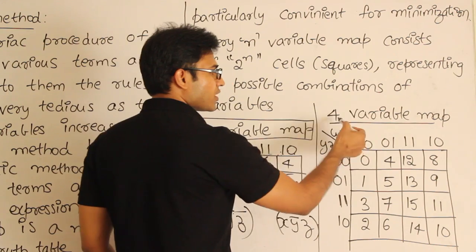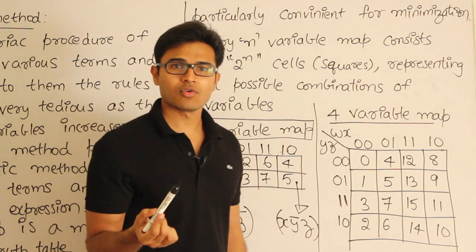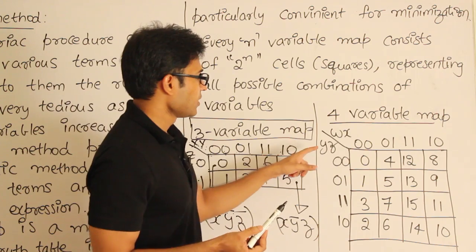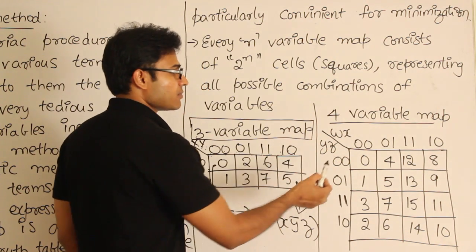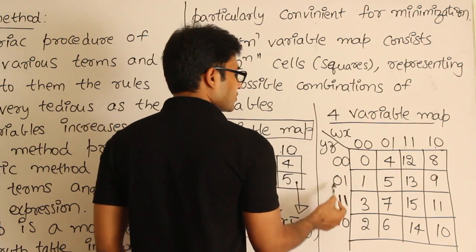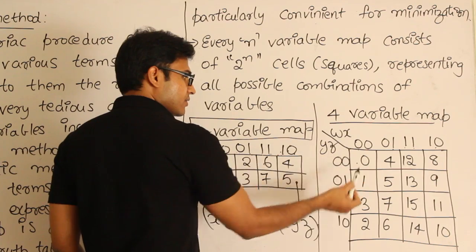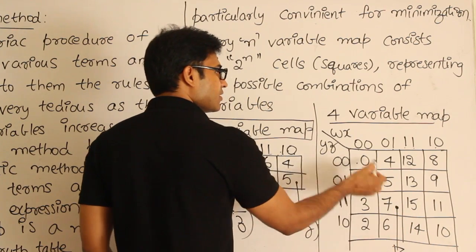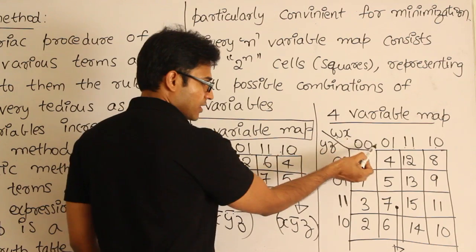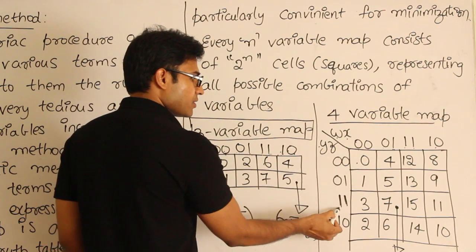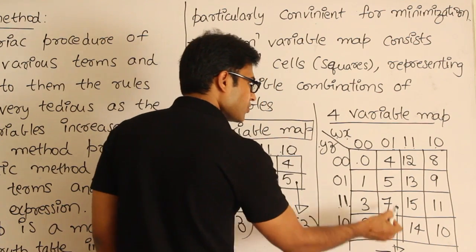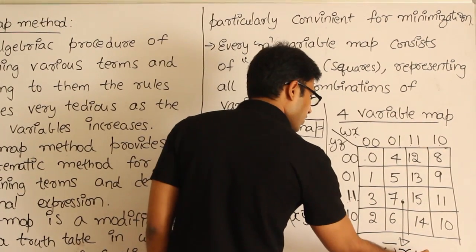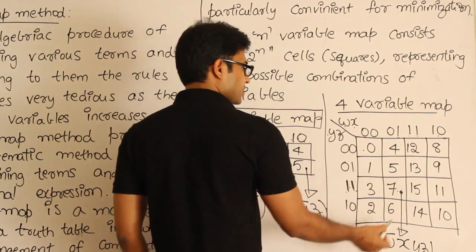For a 4-variable K-map with variables W, X, Y, Z, the number of min terms is 2^4 = 16. The column headings follow 00, 01, 11, 10 and similarly the row headings follow the same pattern. Each cell represents one min term. For example, if the WX combination is 01 and the YZ combination is 11, then W is 0 (W-prime), X is 1 (X), Y is 1, Z is 1 — so that cell represents the min term W-prime·X·Y·Z.